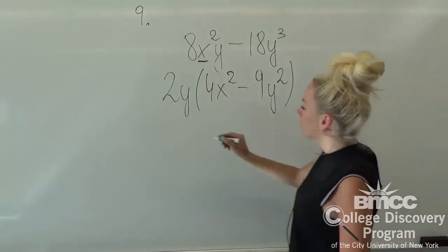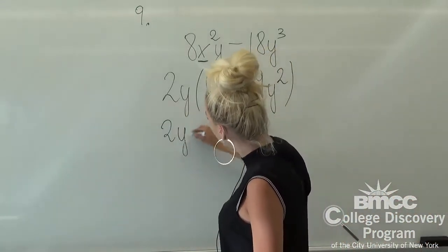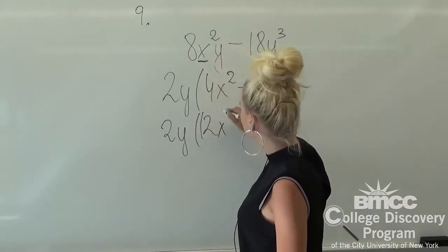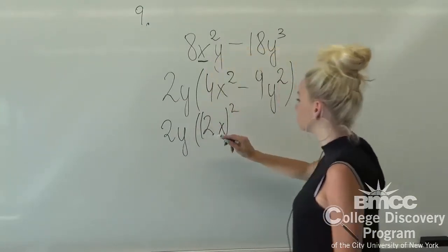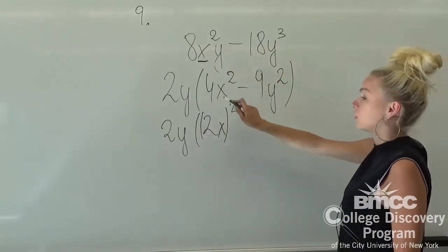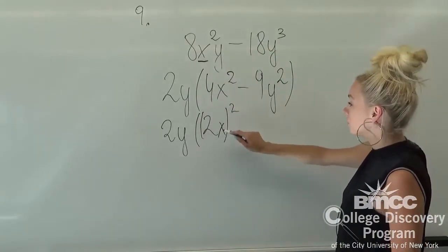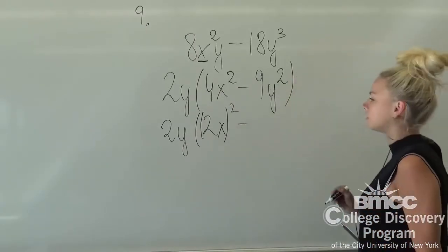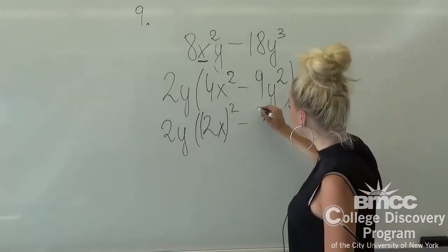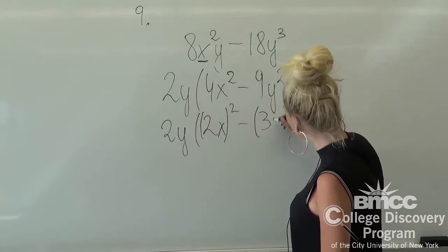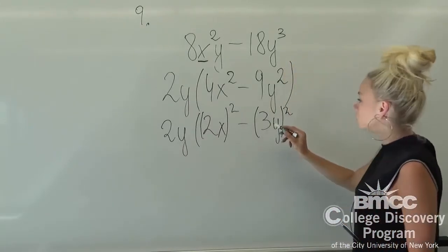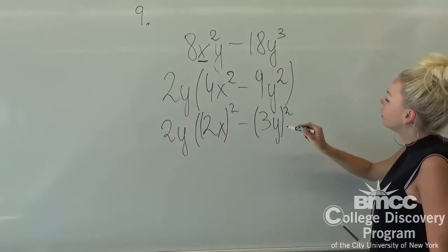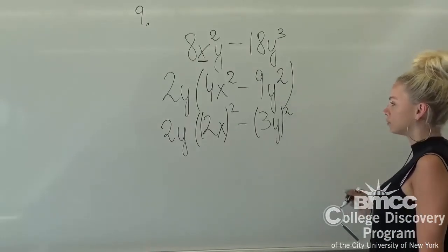We can rewrite it as 2y times (2x)², because 2² is 4 and x² is x². Then, for the second term, we can rewrite it as (3y)² squared, because 3 times 3 is 9, and y times y is y².